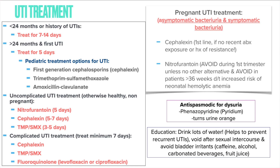For pain management, antispasmodics can be used for dysuria. A great example is Pyridium, which turns urine orange — educate patients not to be alarmed. Patient education should also include drinking lots of water to prevent recurrent UTIs, voiding after sexual intercourse, and avoiding bladder irritants such as caffeine, alcohol, carbonated beverages, and fruit juice.